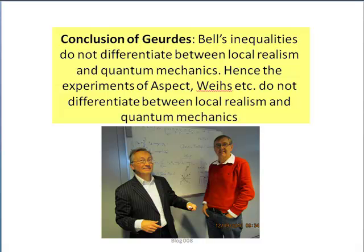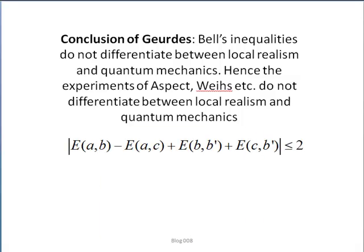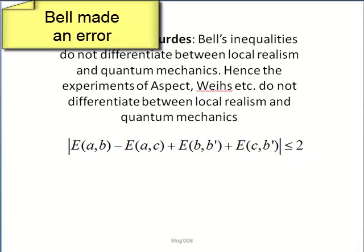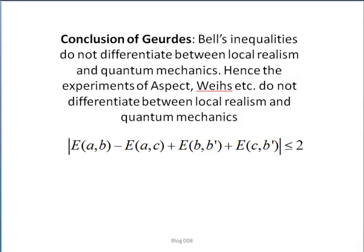That is, Bell's theorem is wrong — it is a major result. Bell is supposed to have shown that the correlation between classical events cannot exceed two, but quantum mechanics violates that. Why? Because Bell made an error. I will discuss that error in due course. In the end, it is shown that quantum spin satisfies the corrected version of Bell's inequalities.